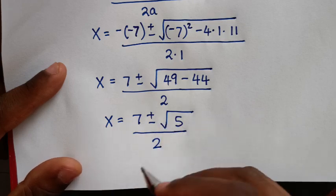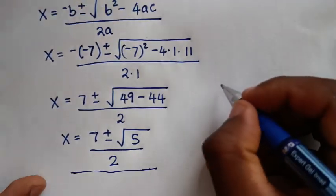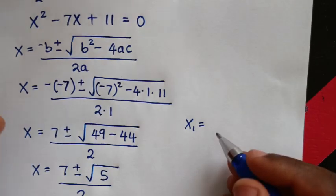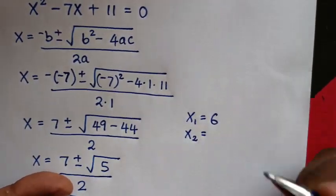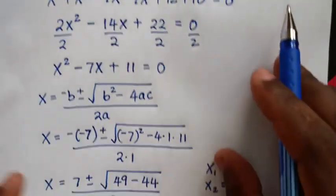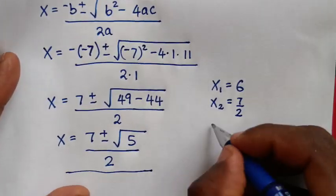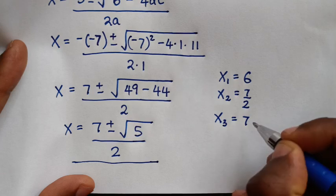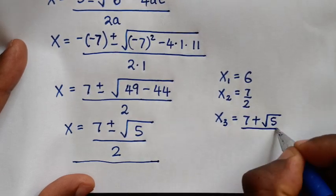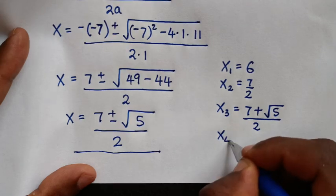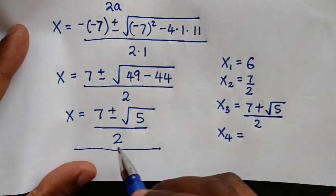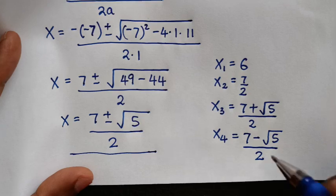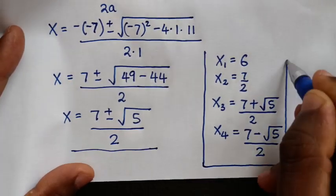In conclusion, the four values of x are: x equals 6, x equals 7 over 2, x equals 7 plus square root of 5 over 2, and x equals 7 minus square root of 5 over 2. These are all the values of x in this problem.